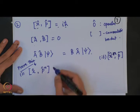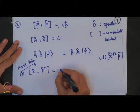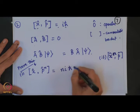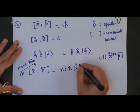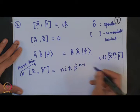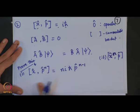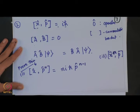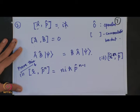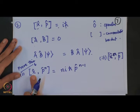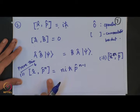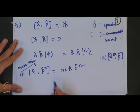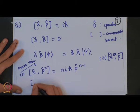I will give you the result of [x̂, p̂ⁿ] which you can use in the problem, but I suggest you must prove this identity. We are going to use this in tutorial problem 2. In the second question you are given two operators — position operator x̂ and momentum operator p̂ — and you have to evaluate the commutator of these 2 operators.